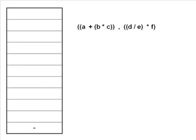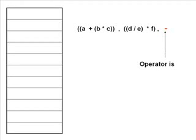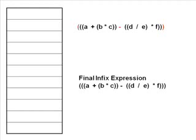Now we come to our last character in the stack, which is a minus. We pop it. We place the minus symbol between the last two operands we have. So our final expression is (A+(B*C)) - ((D/E)*F) with proper braces.